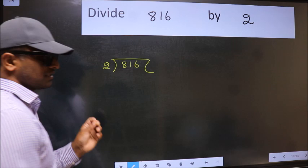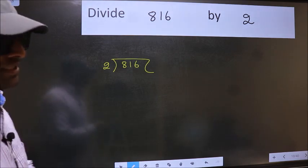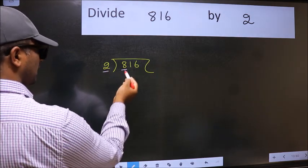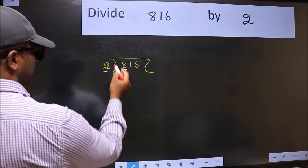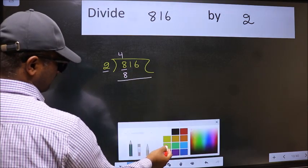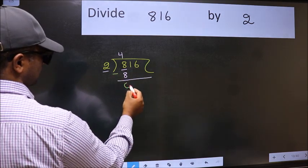This is your step 1. Next, here we have 8 and here 2. When do we get 8 in the 2 table? 2 4s 8. Now we should subtract. We get 0.